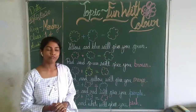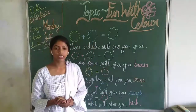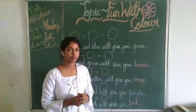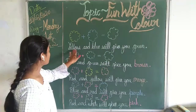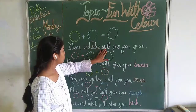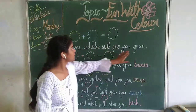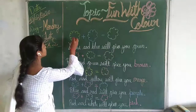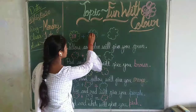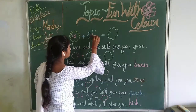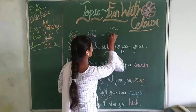So today we will check when you add one color to another color, which color is formed. Yellow and blue will give you green color. This is yellow and this is blue, and both together give which color? Green color.